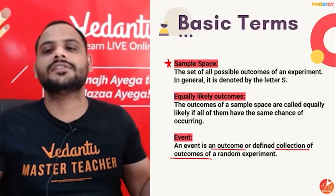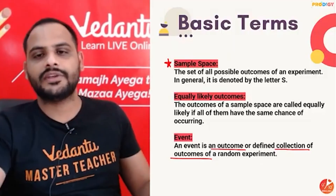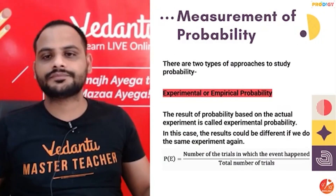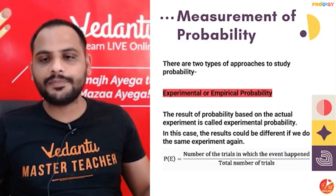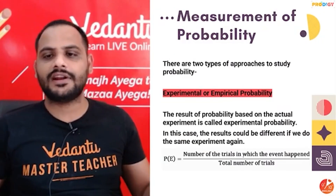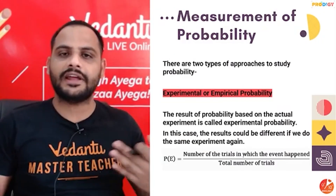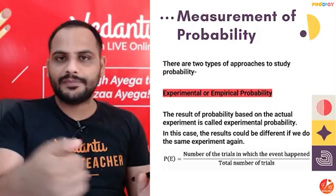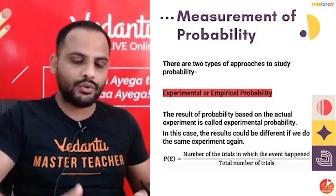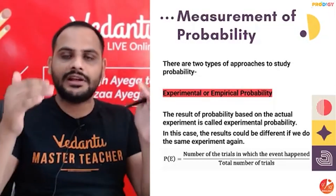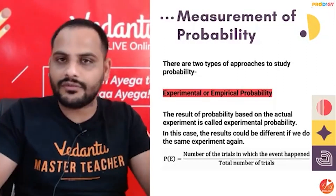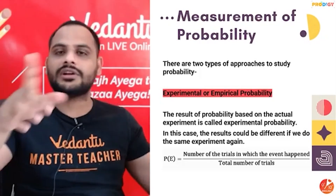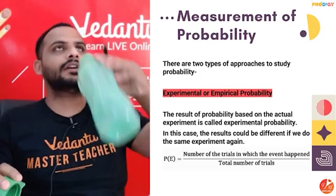Equally likely outcomes means all outcomes have equal chances of happening. Now, experimental probability formula: number of trials in which the event happened divided by total number of trials. This means an experiment has already been conducted, we noted the results, and on the basis of those results we are predicting the next outcome — that is called experimental probability.